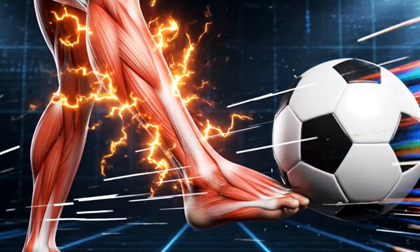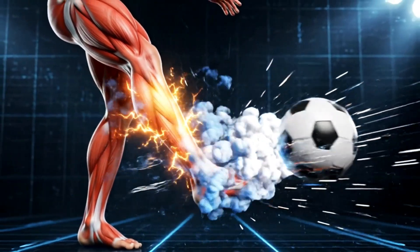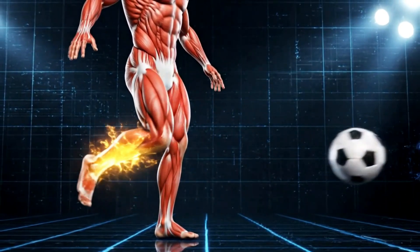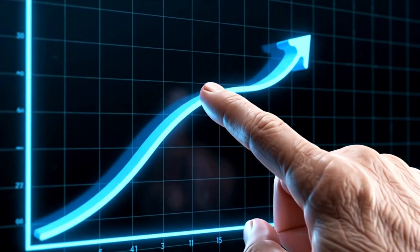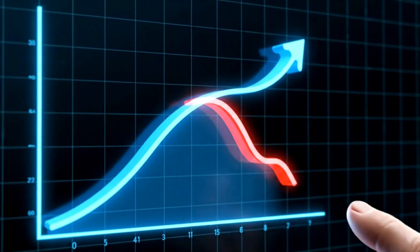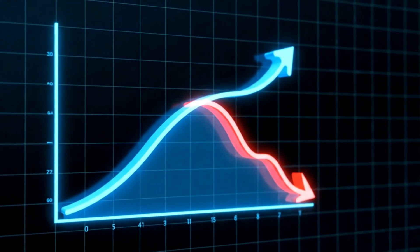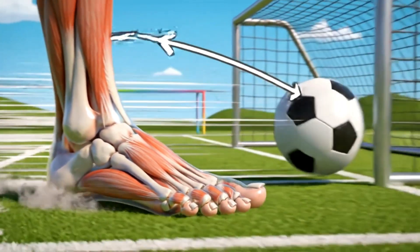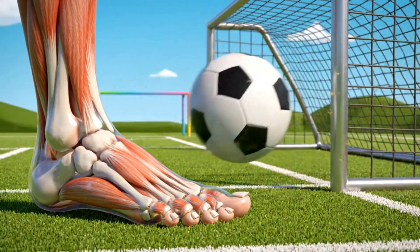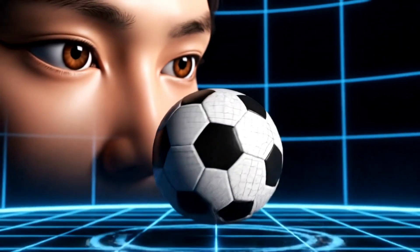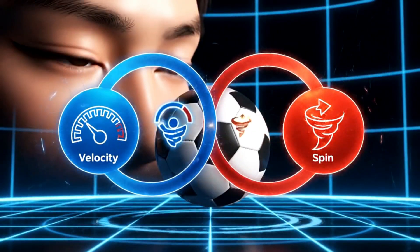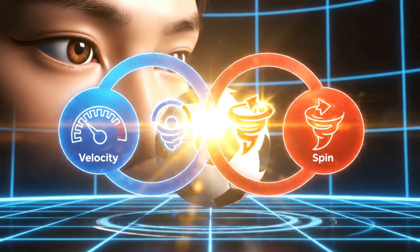The speed of the kick also plays a major role. The faster the ball travels, the more air it pushes through. However, there's a point where the speed can actually reduce the effectiveness of the curve — if the kick is too powerful, the ball might reach its target before the Magnus force has time to fully act. The greatest curved shots require the perfect balance between initial velocity and rotational speed.